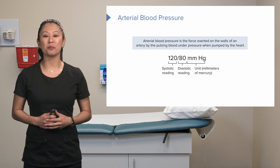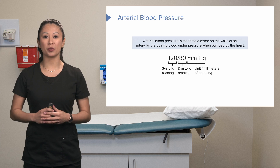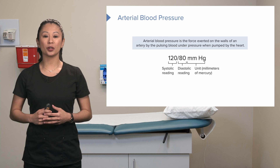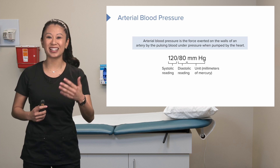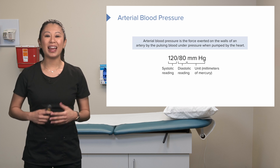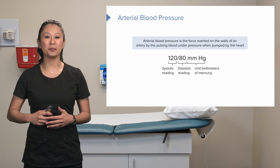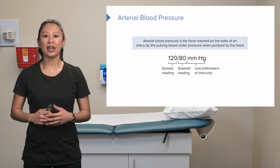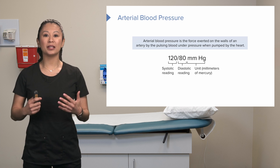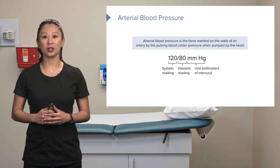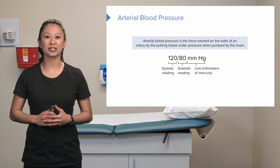When you take a blood pressure, you're going to have the systolic reading — what we call the top number — and the diastolic reading — what we call the bottom number. Blood pressure is measured in millimeters of mercury, so your reading should look something like 120 over 80.